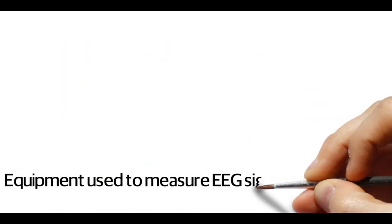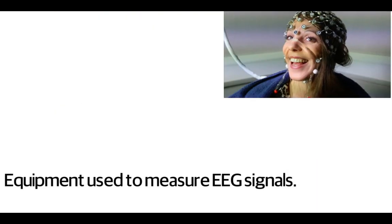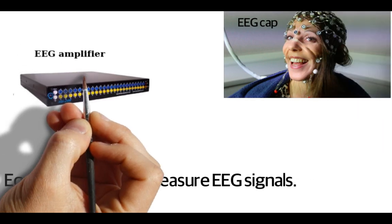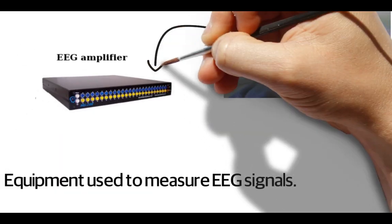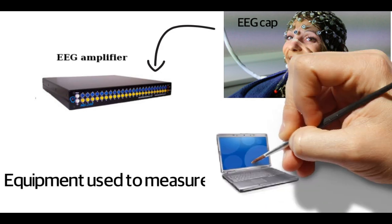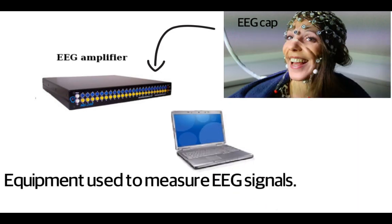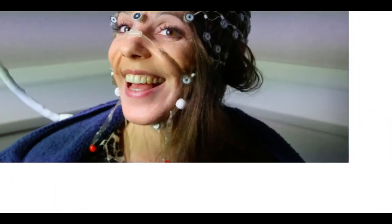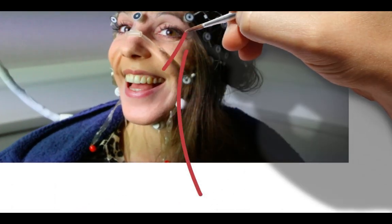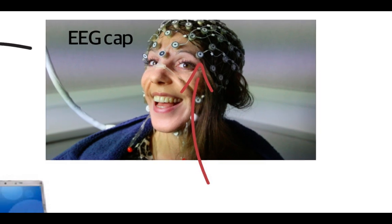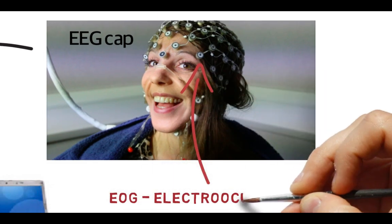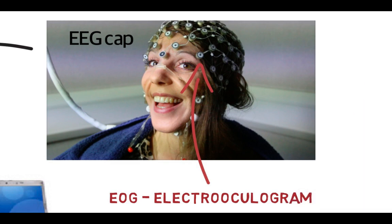Let's look at some of the equipment used to measure EEG signals. First, there's the EEG cap, which has sponges to hold saline solution and metal electrodes to conduct the electrical signals to an EEG amplifier, which amplifies the signal strength. The data then gets sent to a data acquisition computer to be stored and analyzed. Each EEG cap also has special electrodes to measure eye muscle movement — this is called EOG, or electrooculogram.